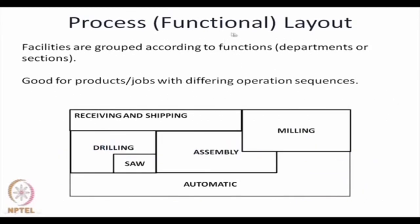In a process layout, which is also known as a functional layout, facilities are grouped according to functions — that means departments or sections are formed. They are good for products that differ in their operation sequences, meaning custom products in which the specifications, designs, and operation sequences are all different. For example, all milling machines are put together in one place, all sewing machines, all drilling machines, all automatic machines are separately placed, and there is a department for receiving and shipping.